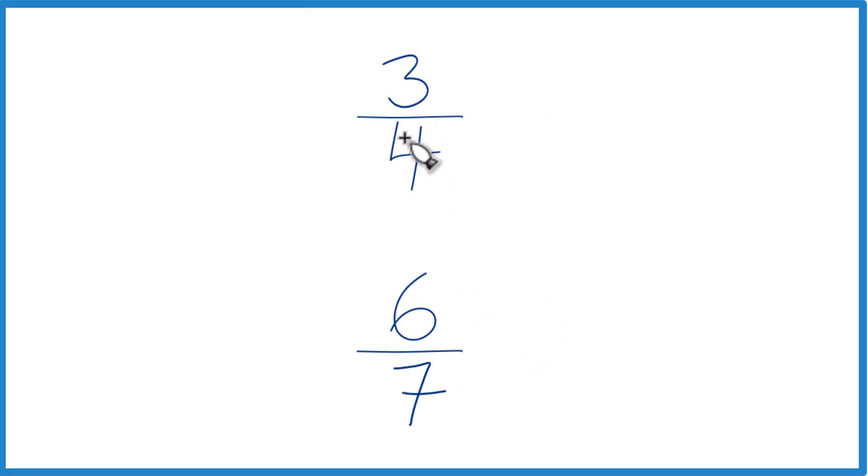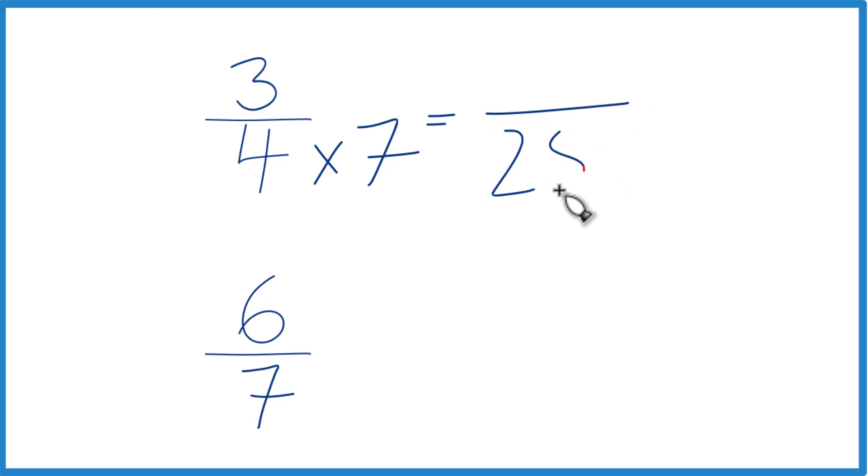So here's how you do that. You could take four times seven, because four times seven, that equals twenty-eight. Down here you could take seven times four, because that equals twenty-eight.